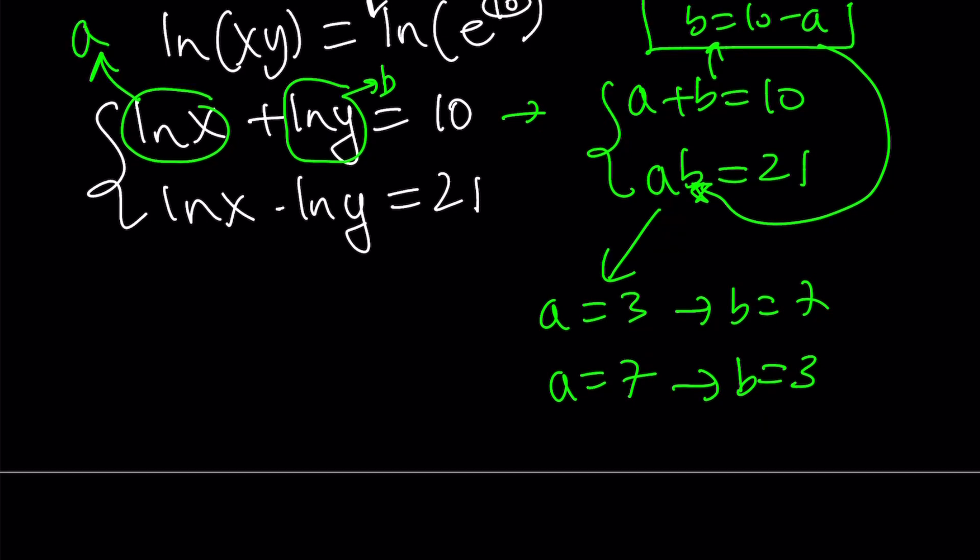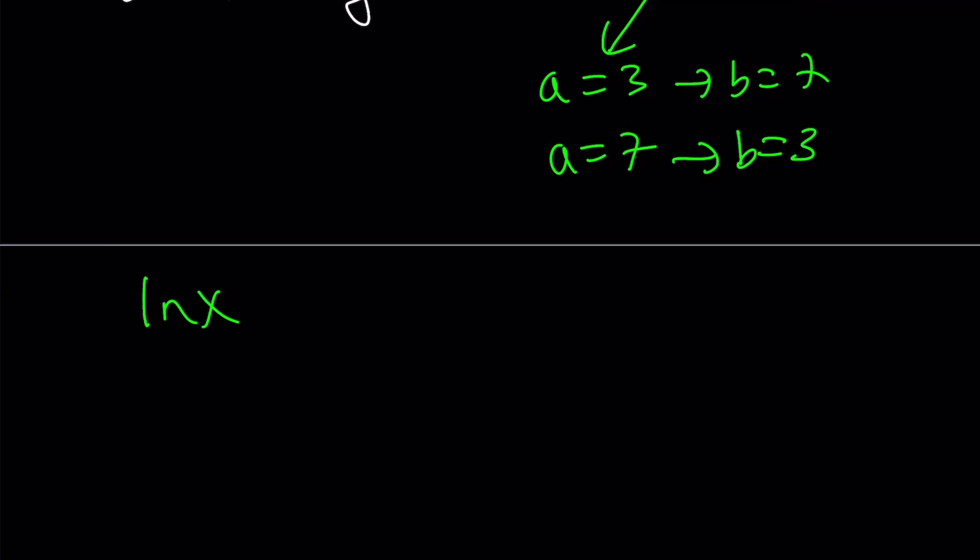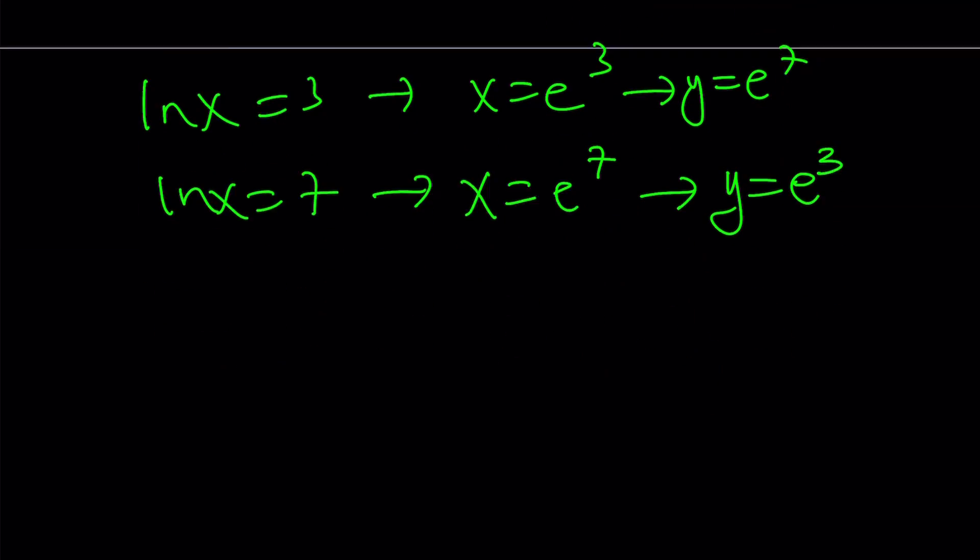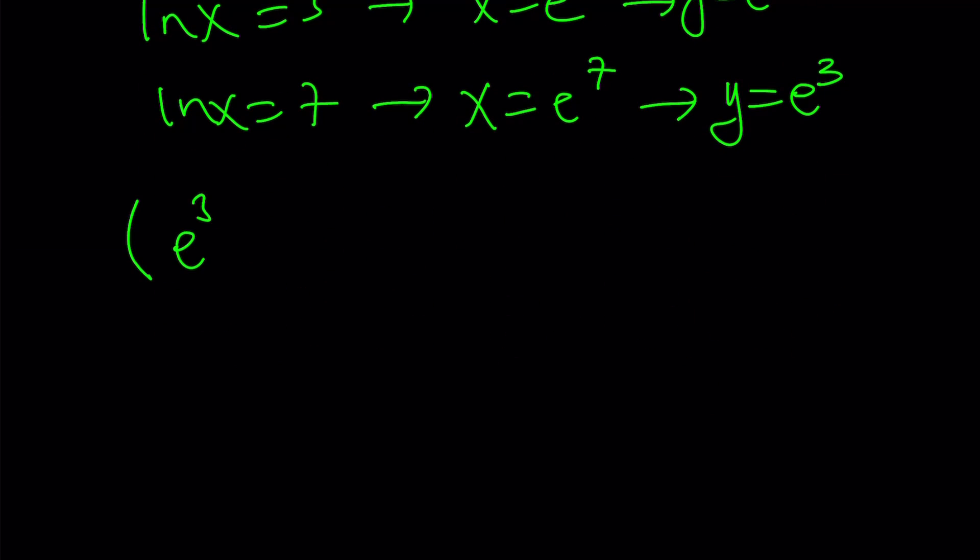But what is a? a is ln x. If ln x is 3, then x is e to the power of 3. And y is e to the 7. If ln x is equal to 7, then x is e to the 7, which implies y equals e to the power of 3. So the solutions, as we can basically write them as ordered pairs: e to the power of 3, e to the power of 7, or e to the power of 7, e to the power of 3.